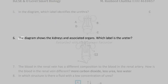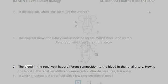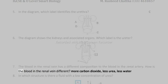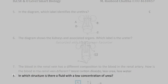6. The diagram shows the kidneys and associated organs. Which label is the ureter? 7. The blood in the renal vein has a different composition to the blood in the renal artery. How is the blood in the renal vein different? More carbon dioxide, less urea, less water.